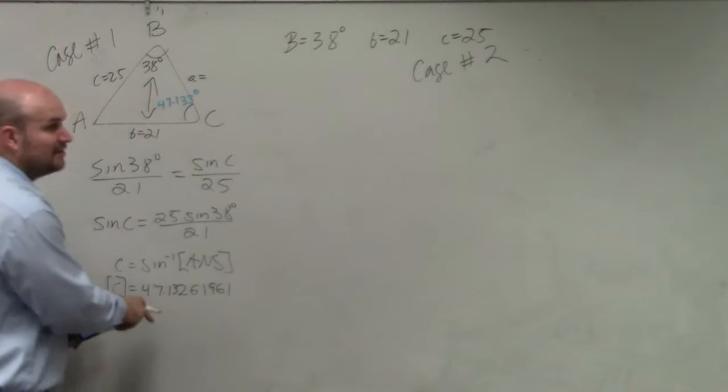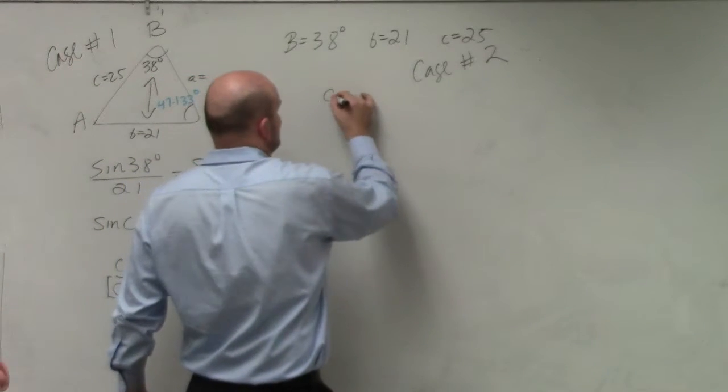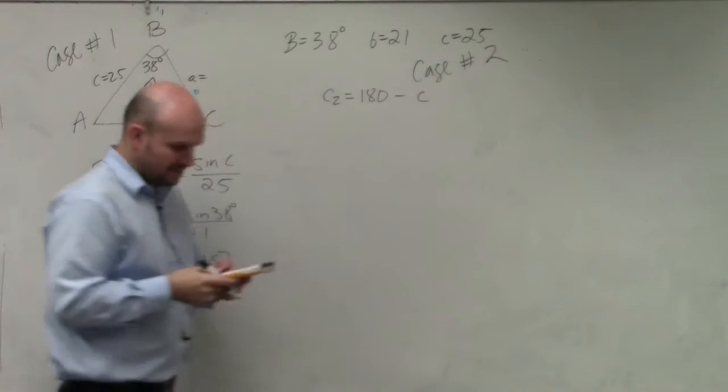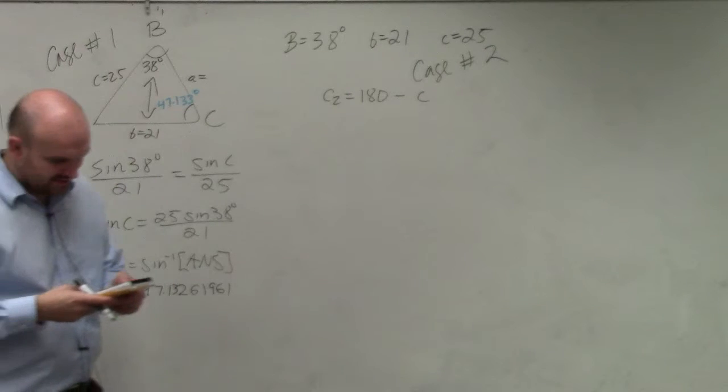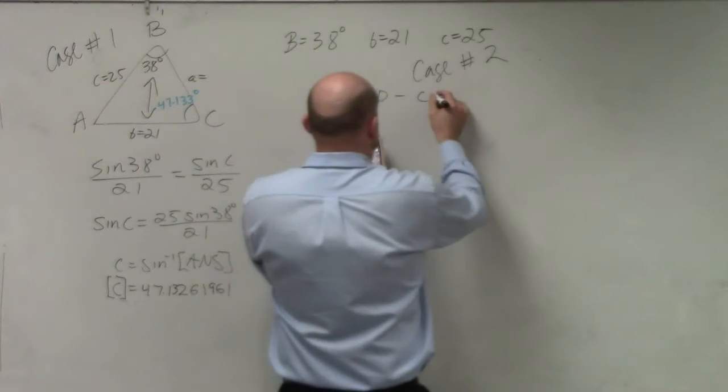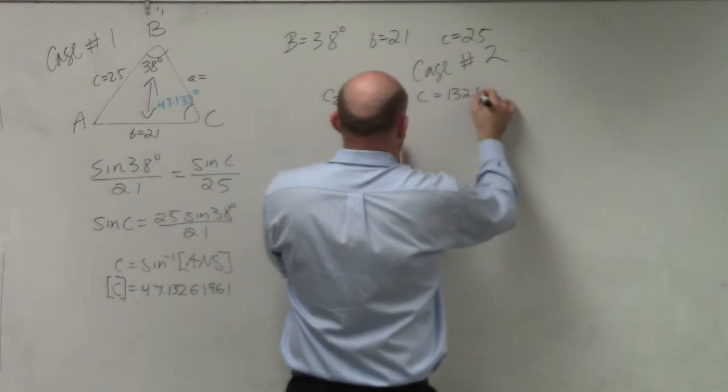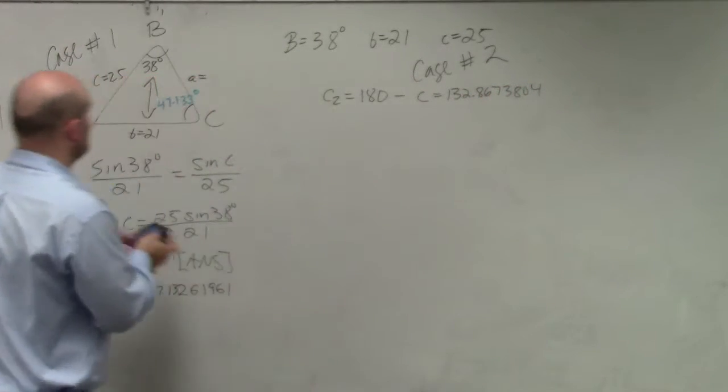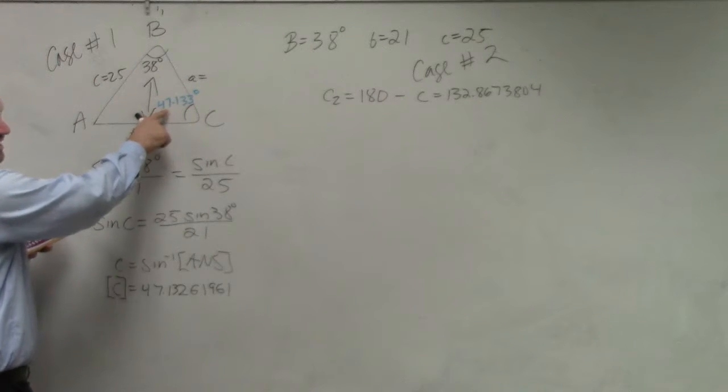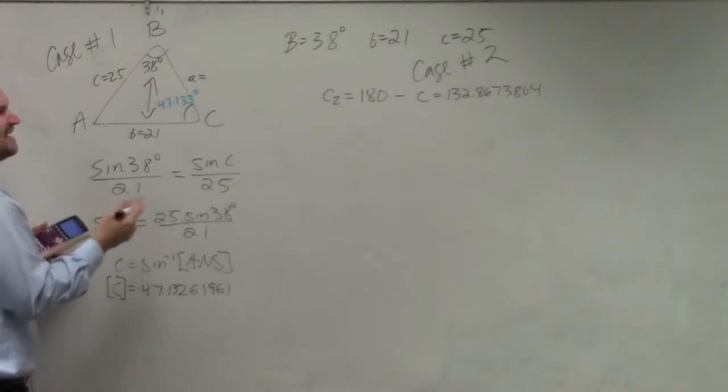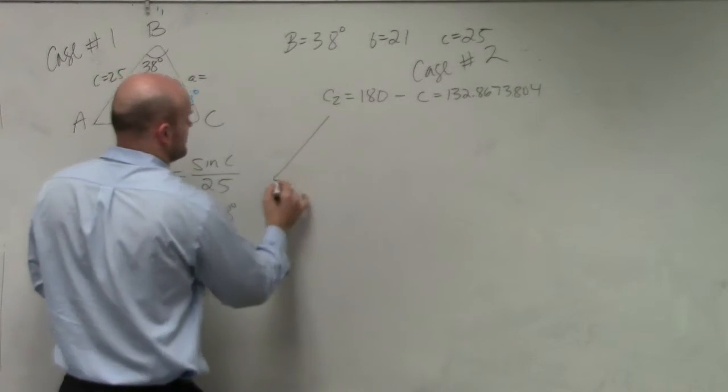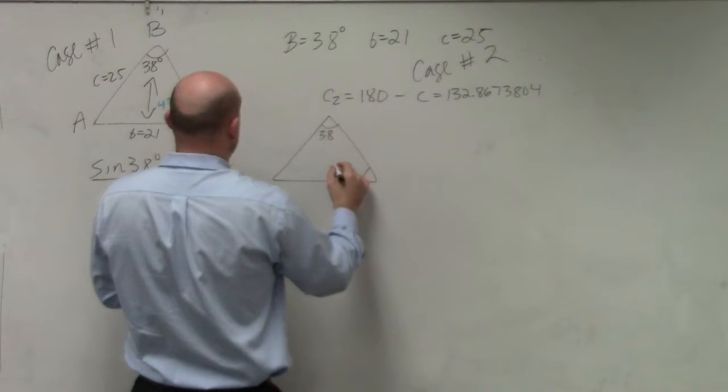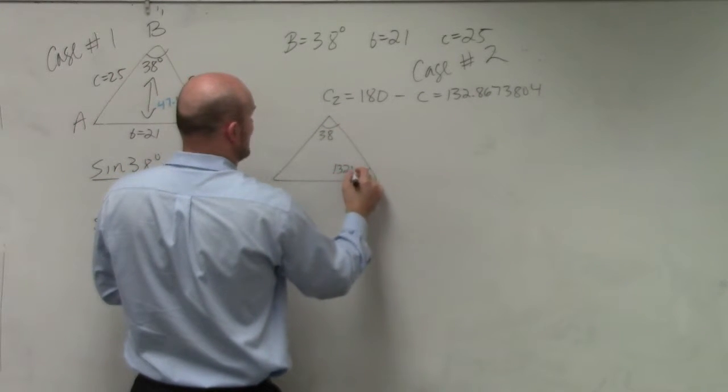Let's go and check to see if there's another case. Let's see if we could have another angle. So I'm going to do c2 equals 180 minus c. So I'll just do 180 minus alpha c, and I get 132.8673804. Guys, is it possible for c to be 132.86? Actually, why didn't I draw my triangle? I'm sorry about that. Is it possible for this to be 132.867?